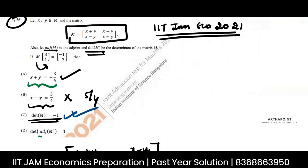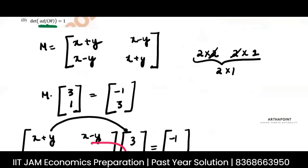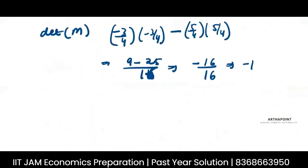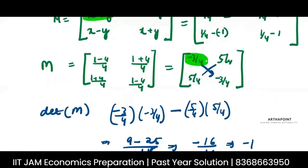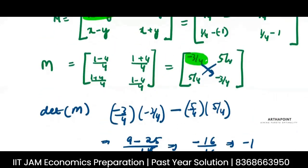Adjoint of M. Okay so let's go ahead and find the adjoint of M. The adjoint of M is going to be, we know that it's a 2 by 2 matrix.